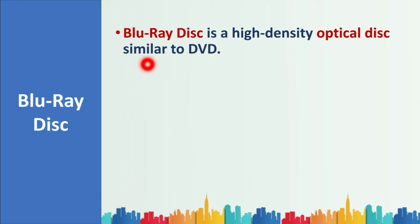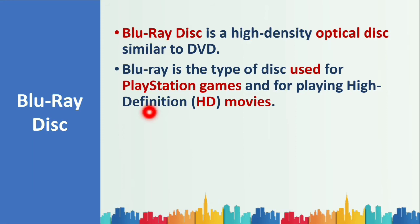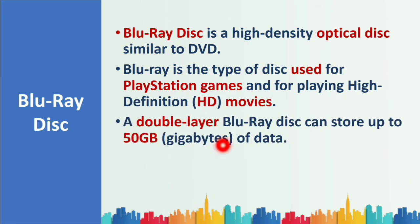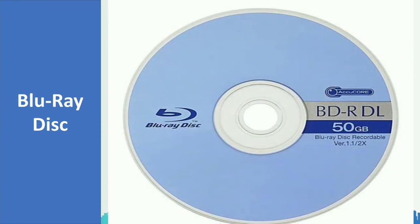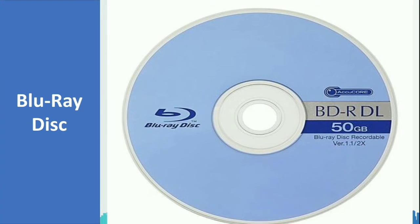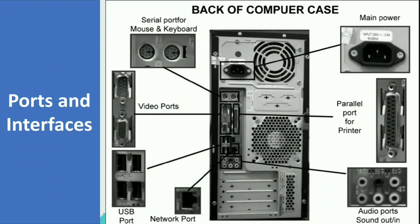Blu-ray disc is a high-density optical disc similar to DVD, mainly used for PlayStation games and for playing high-definition movies. A double-layer Blu-ray disc can store up to 50 gigabytes of data. Blu-ray uses a blue-violet laser to write data, which is why it is called a Blu-ray disc.